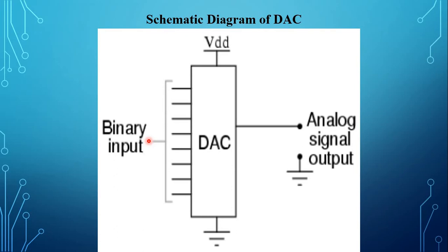The microcomputer produces its output in digital form. Hence a digital to analog converter is required at the output side. A DAC accepts parallel data as input and provides an analog current or voltage as output. The DAC output is proportional to the digital input signal.